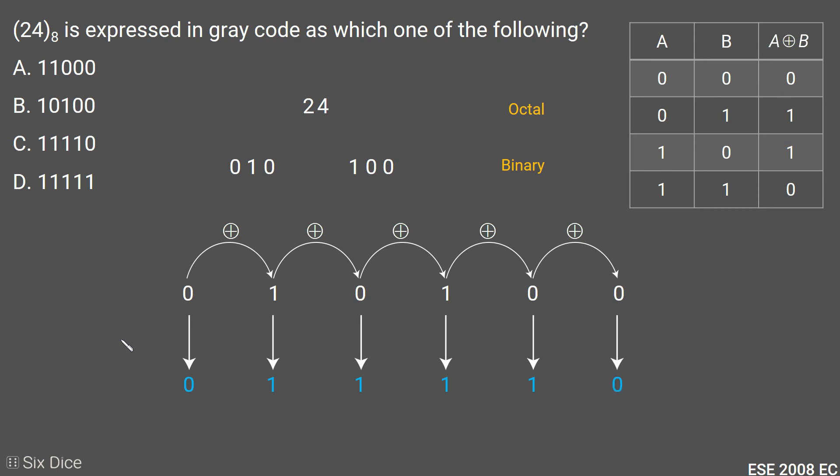Fifth and sixth digit XOR will result in 0, because both digits are the same, which is 0. 0 XOR 0 will result in 0. Here we have the answer: 011110, which is option C.